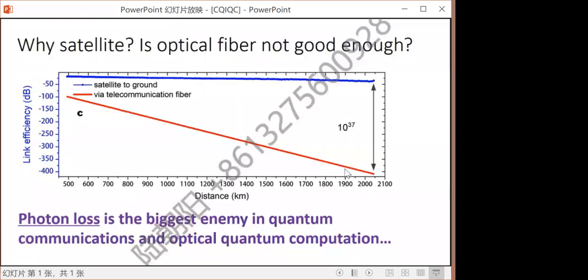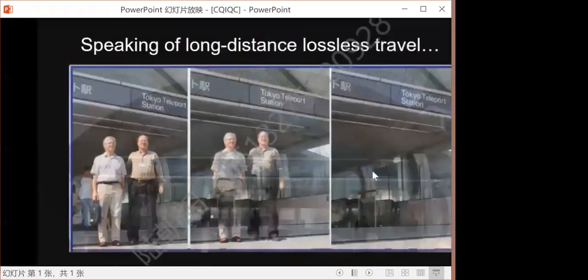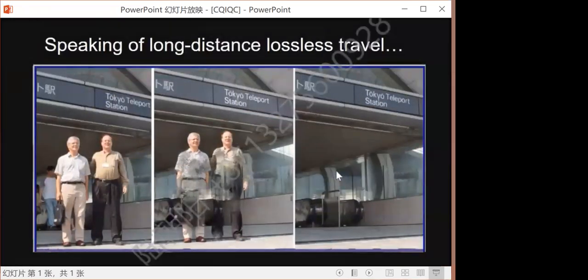Satellite-based quantum communications can take advantage of the nearly vacuum environment in space, where absorption is negligible, and the main loss is diffraction loss. At a distance of 2,000 kilometers, the effective photon loss is reduced by a huge factor of about 10 to the power of 35. Satellite does not actively overcome photon loss. It mitigates photon loss by creating a new ultra-low-loss channel. One way to overcome photon loss is quantum communication or quantum computation, a point I will come back to at the end of my talk.